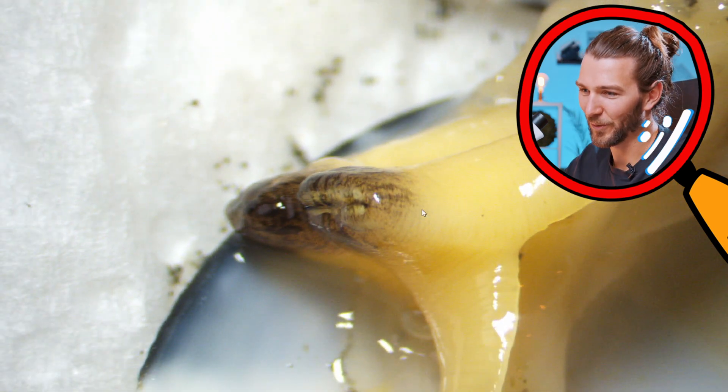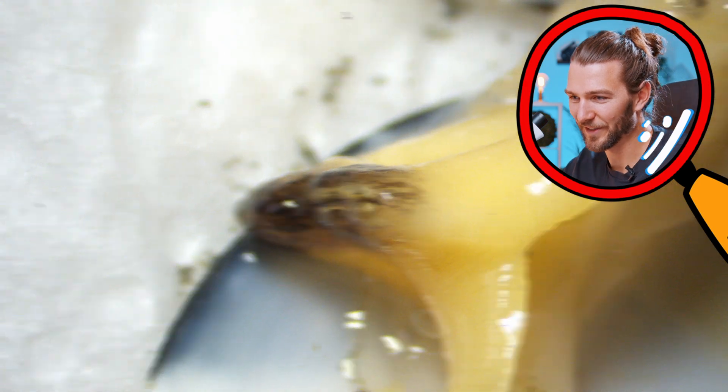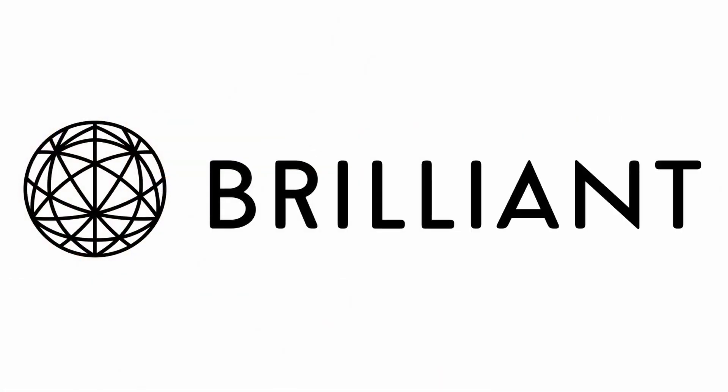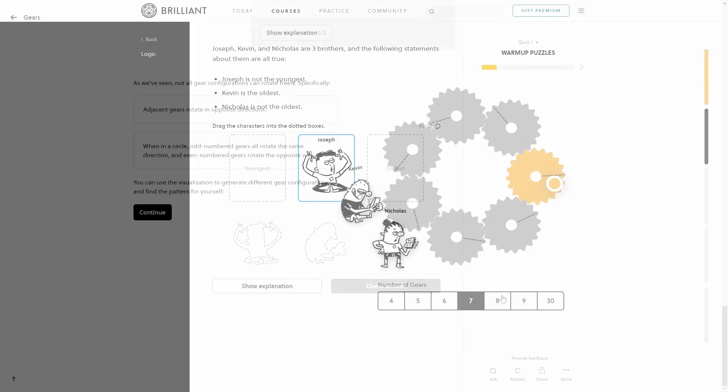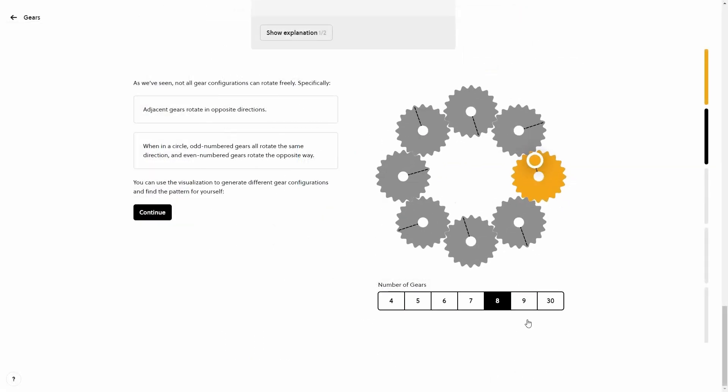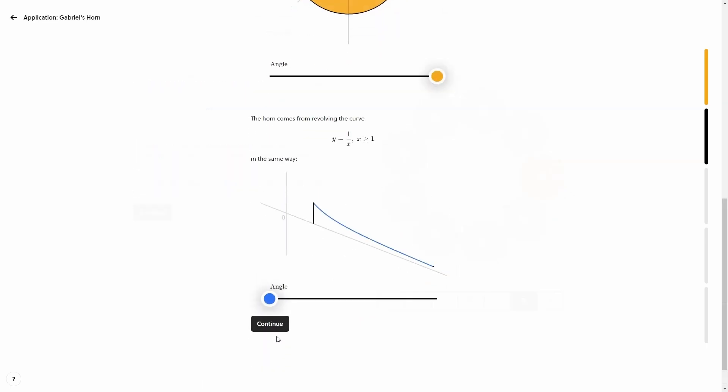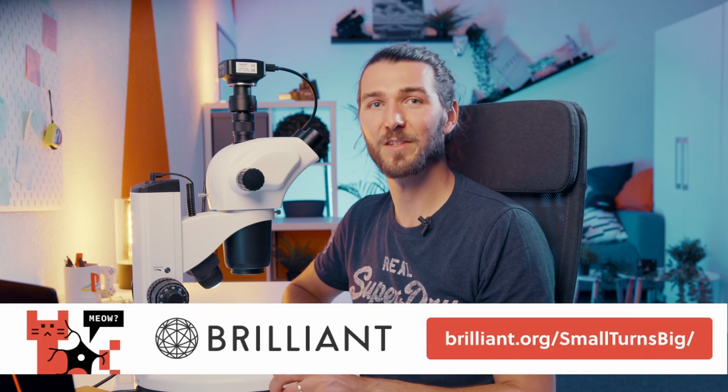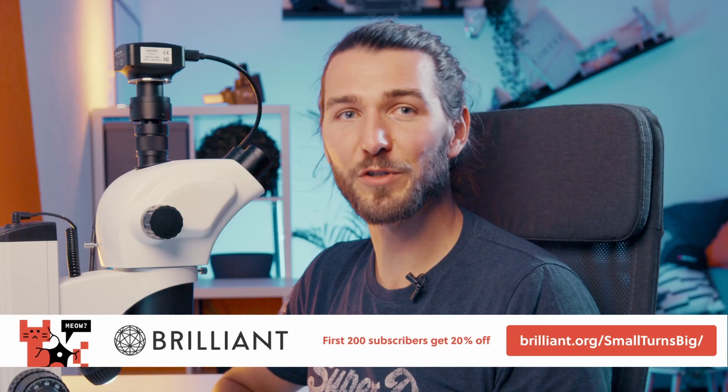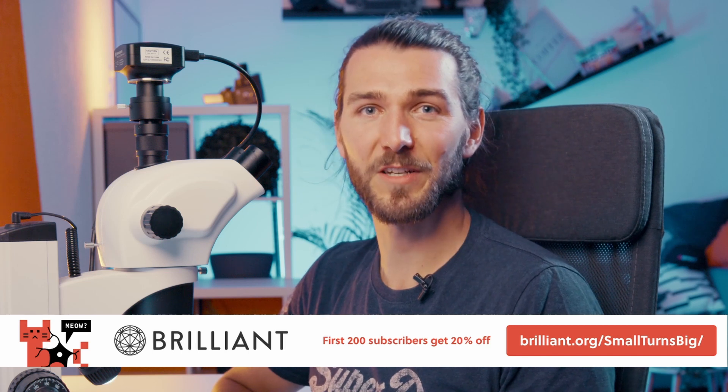So this is quite cool because you see how it's moving. If this got you interested in learning STEM topics to make improvements in your life, then I recommend you check out Brilliant to improve your problem-solving and critical thinking skills. Their lessons are interactive so that you're applying what you've learned and understanding the why of it instead of just memorizing formulas to get by. To supercharge your learning, go to brilliant.org/smallturnsbig, and the first 200 signups get 20% off the annual premium subscription.